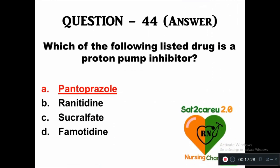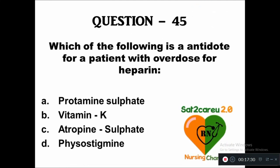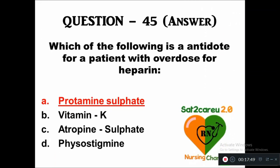Question 45: Which of the following is an antidote for a patient with overdose of heparin — option A: protamine sulfate, B: vitamin K, C: atropine sulfate, D: pyridostigmine. The antidote for overdose of heparin is option A, protamine sulfate.